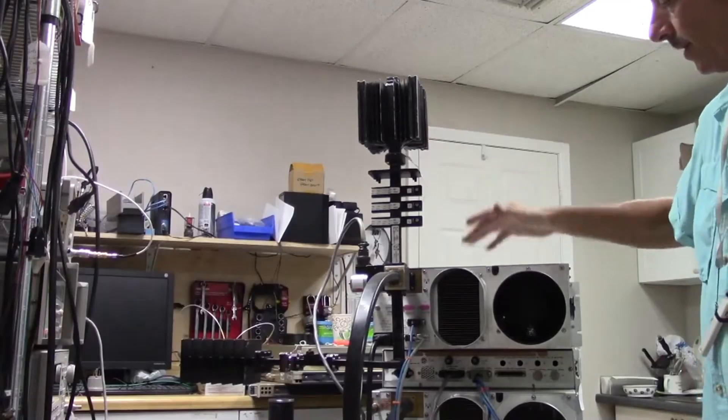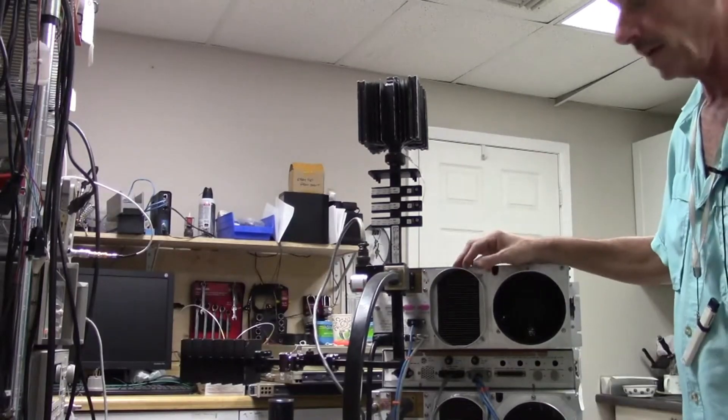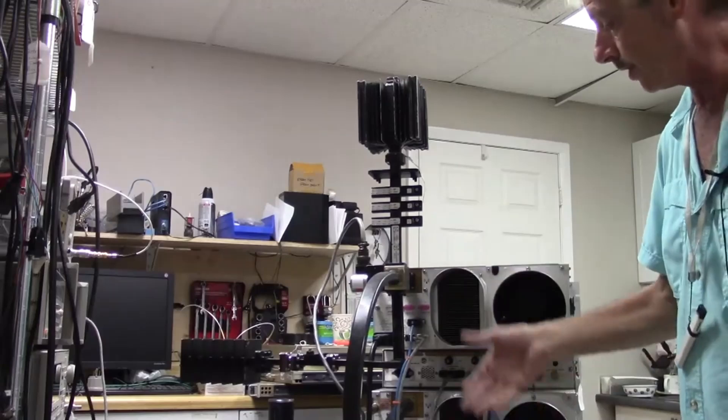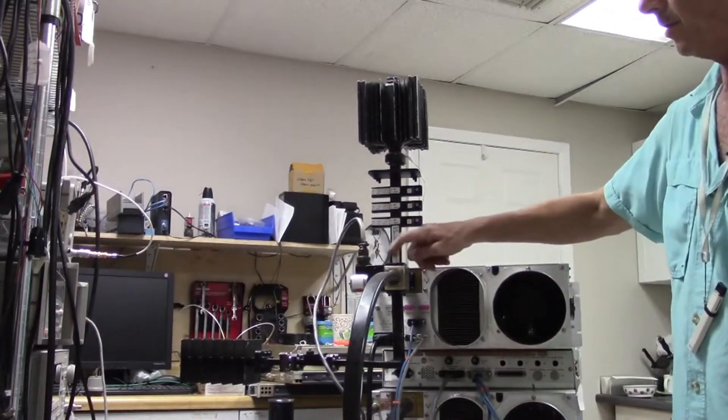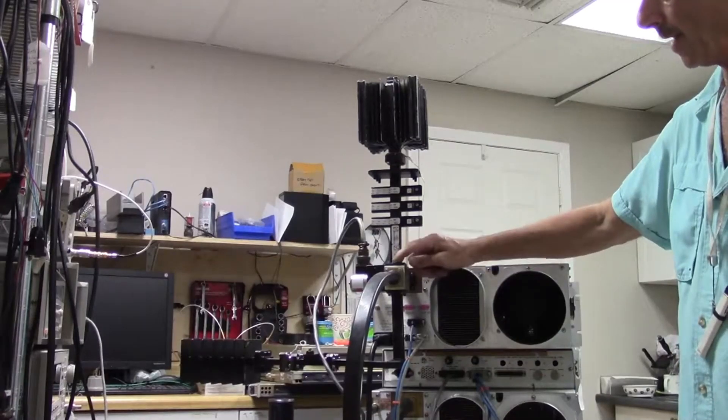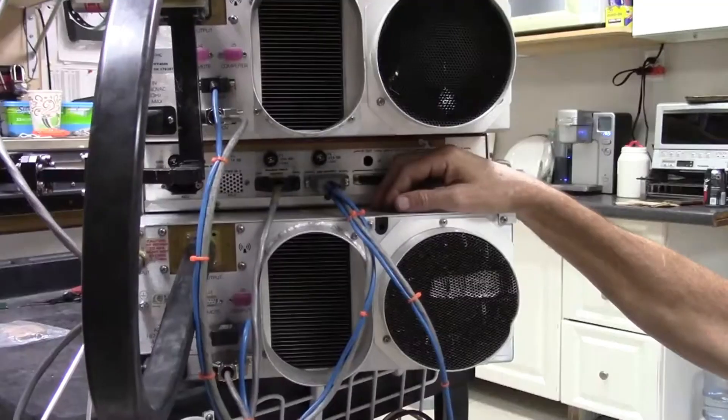Again, this setup here is for testing. Obviously, once it gets racked, it would be dressed up much nicer than we have it here. Antenna load. The antenna will be the load coming out the top port. So now from here, we're going on to the actual redundancy controller and the cabling to it.